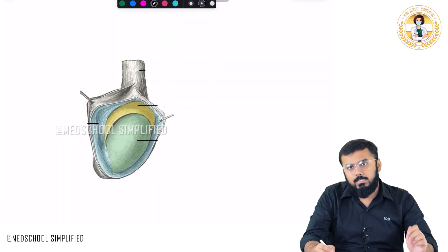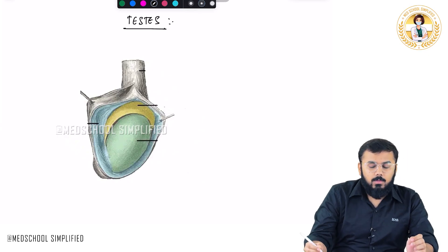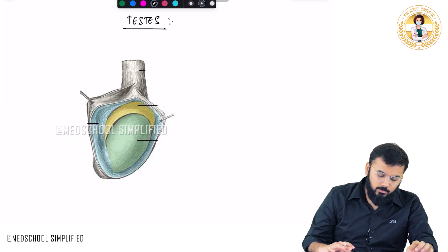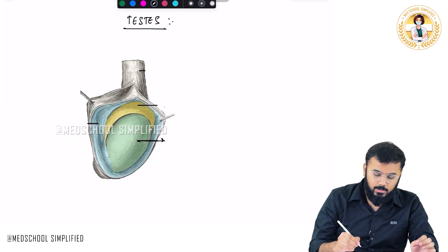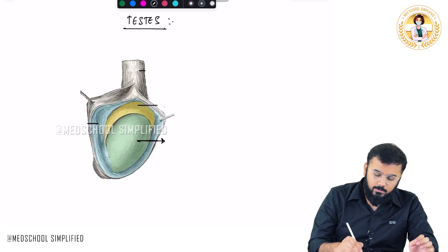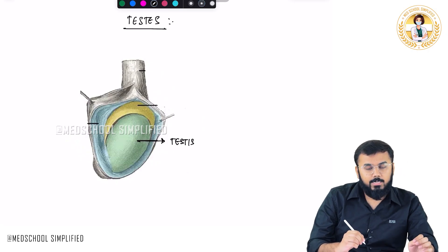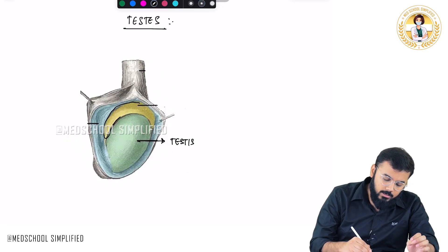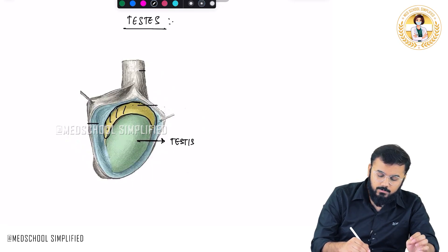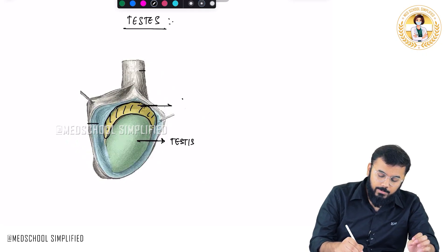Hello guys, so now we shall be discussing regarding the testes. This green color structure in the center which I've drawn over here - this is your testes. Posterior to the testes, you see this yellow color shade - this particular structure which is located posterior to the testes is called as your epididymis.